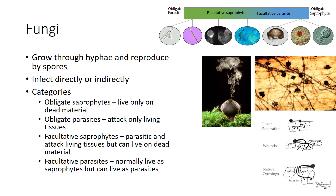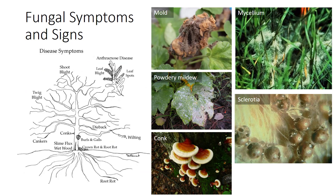Fungi require the right amount of moisture and temperature in order to germinate. Some fungi live as saprophytes, feeding on decaying organic material, while others live as parasites, feeding on other living organisms. Some fungi live as facultative saprophytes, preferring to be parasitic but able to live on dead material, or as facultative parasites, normally living as saprophytes but able to live on live tissue. The symptoms of fungi include rust, leaf spots or blights, cankers, root rot, crown rot, vascular wilts, and mildews. Usually you need a microscope to see the spores and hyphae, but some fungi develop large amounts of hyphae and spores which you can see.